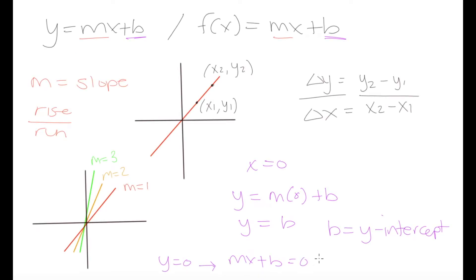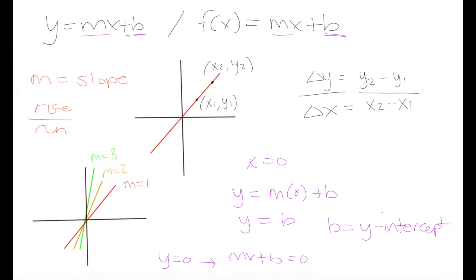In the last video we looked at linear functions in the form of y is equal to mx plus b, where m was our slope and b was our y-intercept. In this video we're going to look at the effect of positive and negative m on the appearance of a graph.